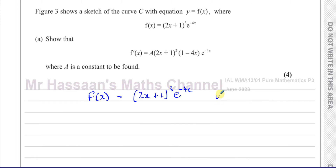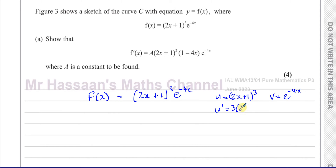We call one of the products u — in this case it could be either, it doesn't really matter — and we call the other one v. So 2x plus 1 to the power of 3 is u, and v is e to the power of minus 4x. We differentiate each separately. For u, this is a bracket to a power, so we multiply by the power, reduce the power by 1, and by the chain rule multiply by the differential of 2x plus 1, which is 2. So u dash equals 6 times 2x plus 1 squared.